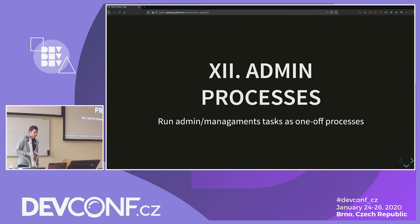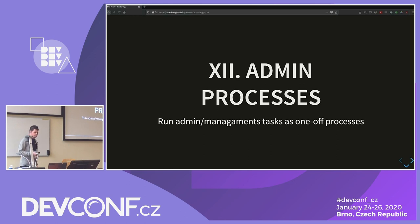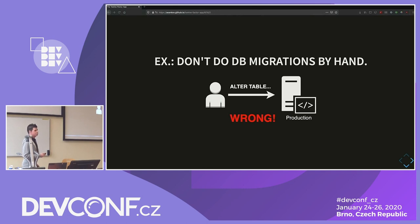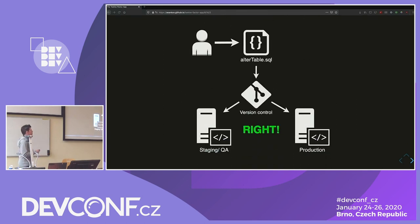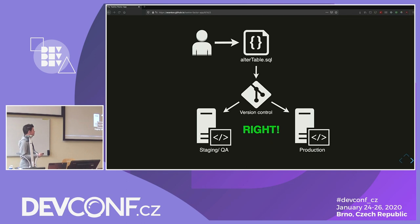The last factor is called admin processes, and it states that you should run admin and management tasks as one-off processes — they should be stateless and ideally tracked in some way. A good example that most developers deal with is database migrations. One approach is to log into the production database and execute SQL queries directly, but if you're doing this you're probably doing it wrong. A better way is to commit the SQL you want to execute in a file, commit that into version control, and have it executed on your database as part of your deploy script. This gives you accountability and traceability of what was executed when, and reproducibility — running it across multiple environments automatically.